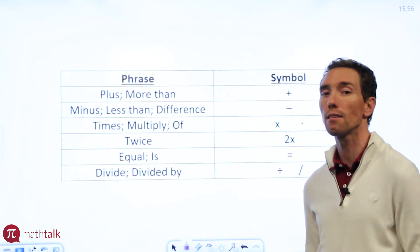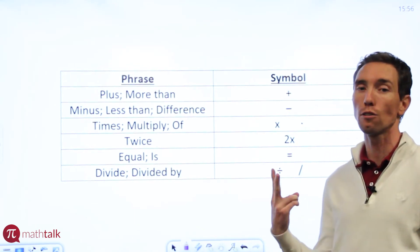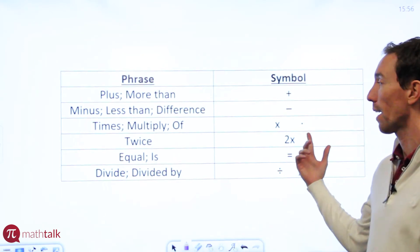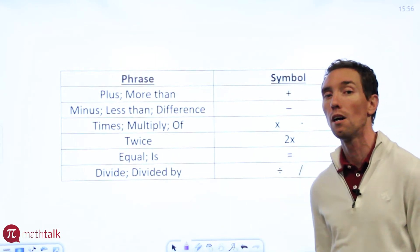If you see the phrase 'twice,' anytime you do something twice you do it two times, so you're going to multiply it by two. You can represent that by 2x or two times your number or something like that.